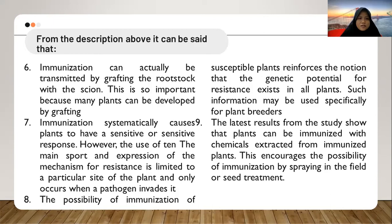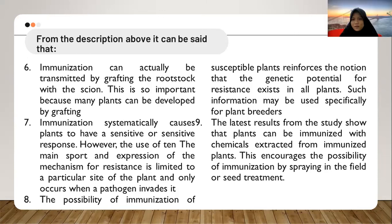Seventh, immunization systematically causes plants to have a sensitive or hypersensitive response. However, the expression of the resistance mechanism is often limited to the particular site of the plant and only occurs when a pathogen invades it. Eighth, the possibility of immunizing susceptible plants reinforces the notion that genetic potential for resistance exists in all plants, and such information may be used specifically by plant breeders. Ninth, the latest results show that plants can be immunized by chemical extracts from immunized plants, opening the possibility of immunization by spraying in the field or seed treatment.